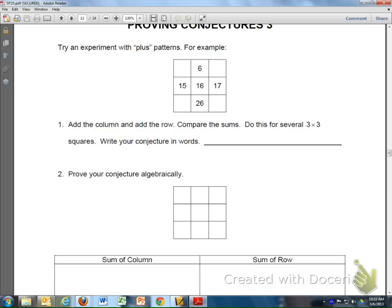Looking at this page, we are talking about proving some conjectures. It says try an experiment with plus patterns. There's a bunch of numbers here in the square, and it says add the column and add the row.